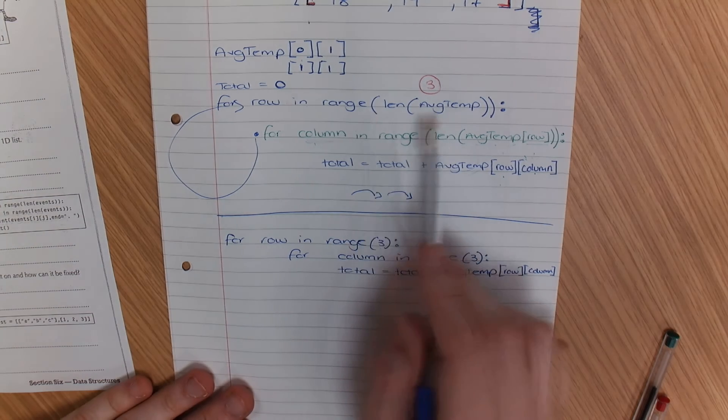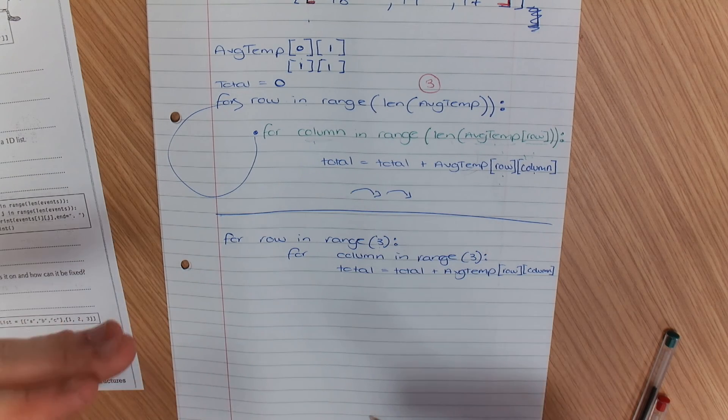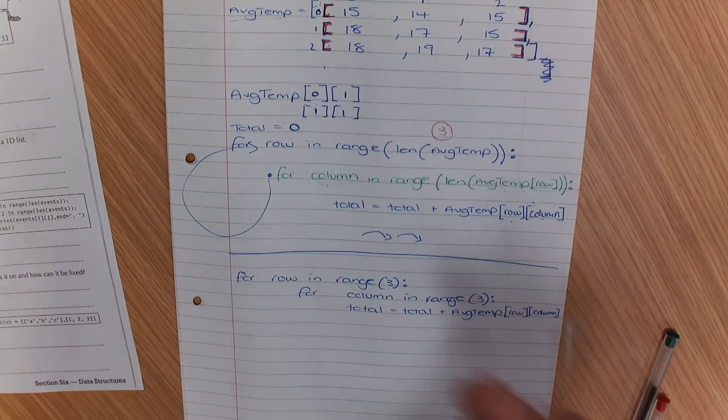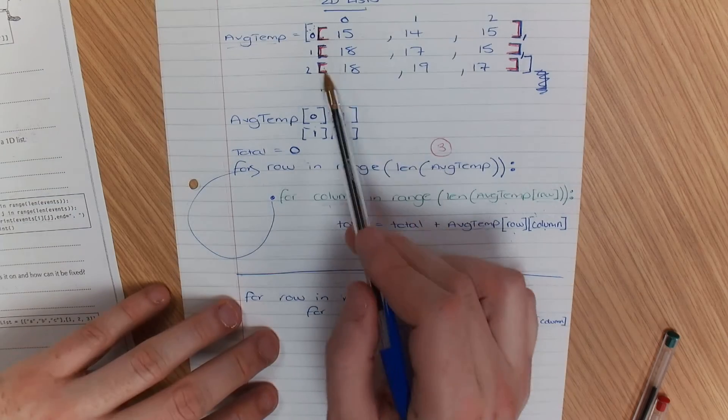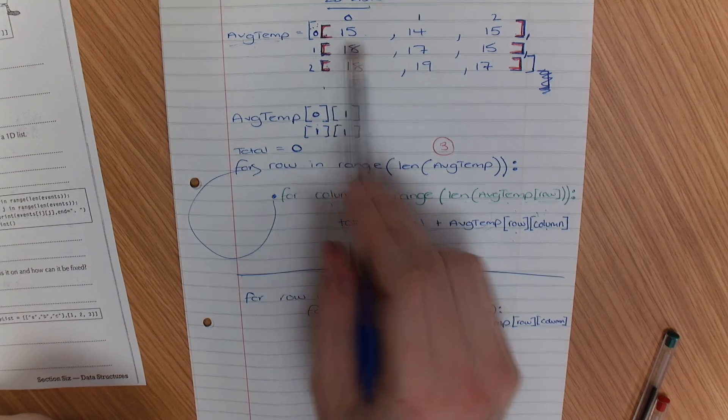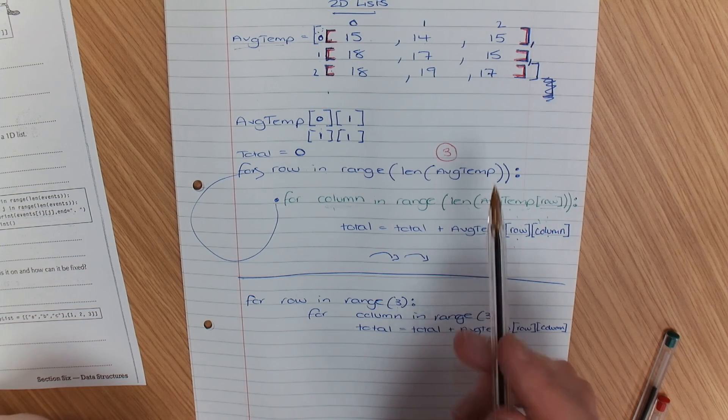So if you struggle with using len, simplify it for yourself. If the exam question says there are three items on each, there are three rows, there are three items on each one, just use it that way. So if it was two items per row,